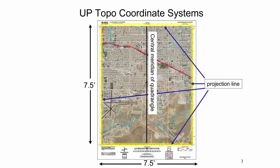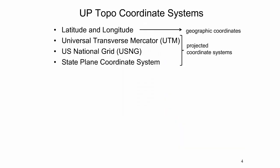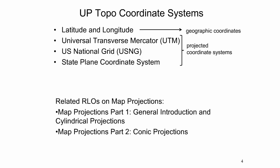While U.S. topo maps are cast to the UTM Projection, labels from other coordinate systems can also be found along the Projection Line. This presentation explains the different coordinate systems imposed on U.S. topo maps through tick marks and grid lines. It starts with geographic coordinates, which are commonly used to describe a point location without a map projection. Projected coordinate systems, including the Universal Transverse Mercator grid, the U.S. National Grid, and the State Plane Coordinate System, are described in further detail.